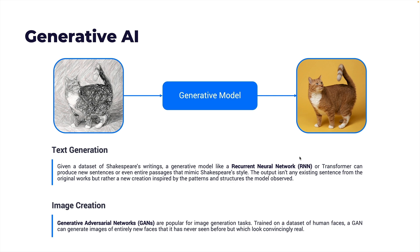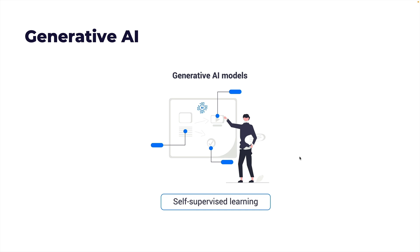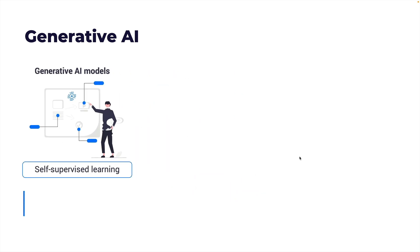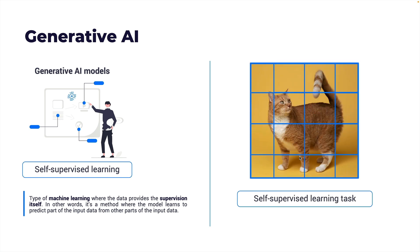Image creation is based on Generative Adversarial Networks (GANs). They are very popular for image generation tasks — trained on a dataset of human faces, a GAN can generate images of entirely new faces it has never seen before, but which look convincingly real. Generative AI models are often trained based on self-supervised learning, which is a type of machine learning where the data provides the supervision itself. For example, in a self-supervised task utilizing images, the model might be tasked with predicting a part of an image given the rest, or predicting the color version of a black and white image.